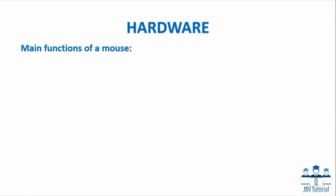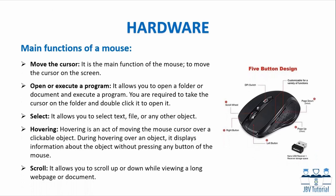What are the main functions of a mouse? Move the cursor: It is the main function of the mouse, to move the cursor on the screen. Open or execute a program: It allows you to open a folder or document and execute a program by taking the cursor to the folder and double-clicking it. Select: It allows you to select text, a file, or any other object. Hovering: It is the act of moving the mouse cursor over a clickable object, displaying information about the object without pressing any button.